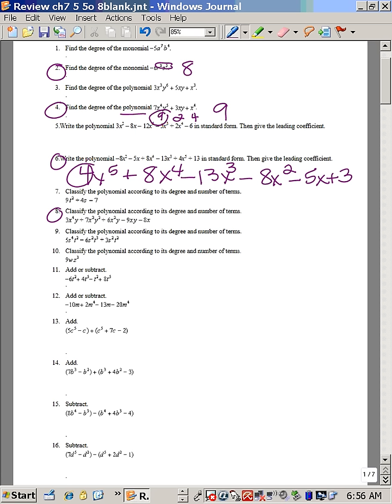Number eight, classify according to the degree. So first I have to find the degree of the entire polynomial. The first degree would be 5 because 4 and 1 is 5. The second degree is 4. The third term, 3, 2, and 1. So this is a fifth degree, which is a quintic. The number of terms, 1, 2, 3, 4, 5. There are five terms, so we call it a polynomial.